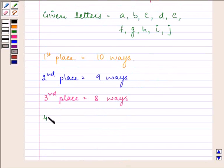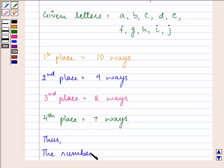And the fourth place can be filled up by seven different ways. So the total number of ways in which these four vacant places can be filled up is the product of these values.